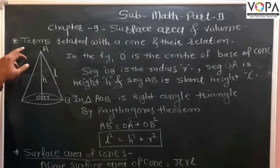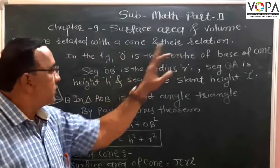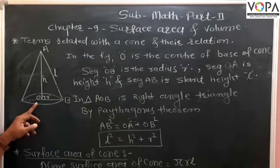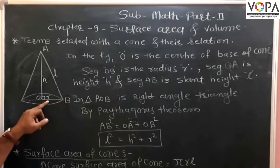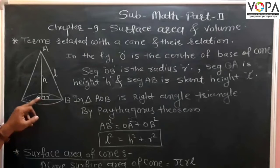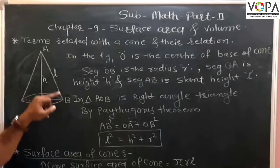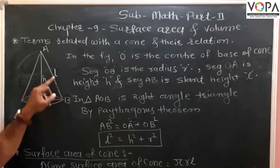We will learn today about the cone and their relations. In the given figure, O is the center of the base of the cone, OB is the radius of the cone, OA is the height of the cone, and segment AB is the slant height of the cone.